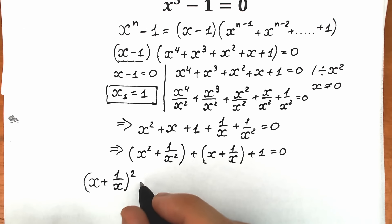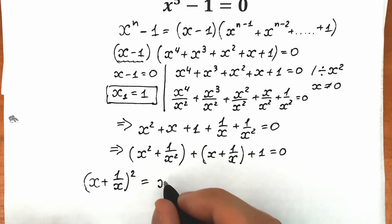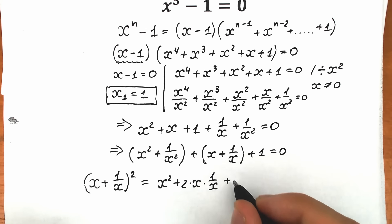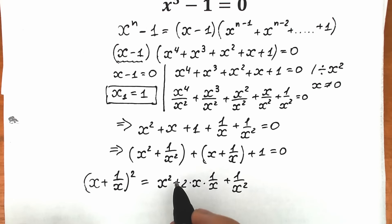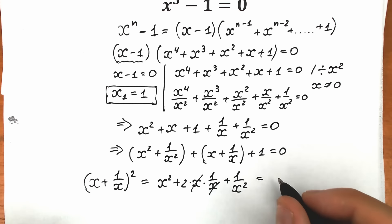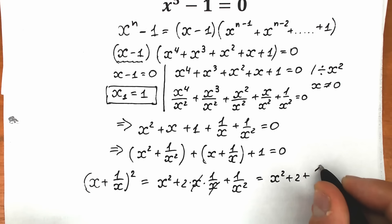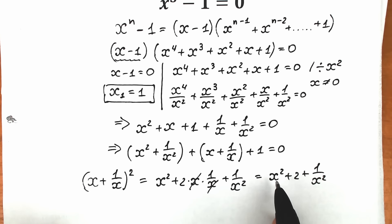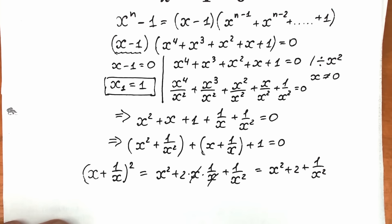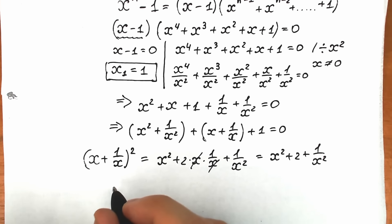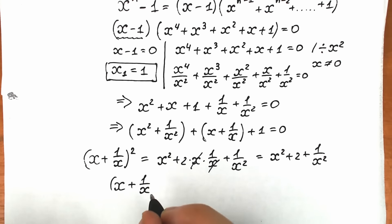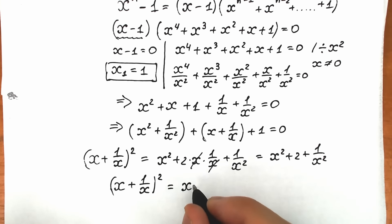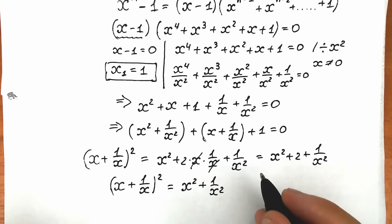If we square the expression x plus one over x, according to the formula we get x squared plus two times x times one over x plus one over x squared, which simplifies to x squared plus two plus one over x squared. Rearranging, we get that x squared plus one over x squared equals the quantity x plus one over x, squared, minus two.